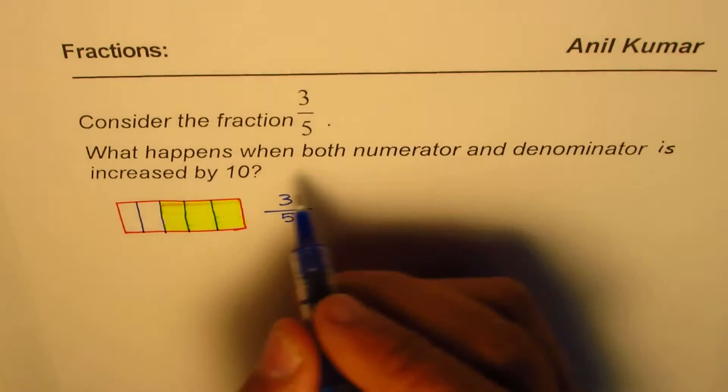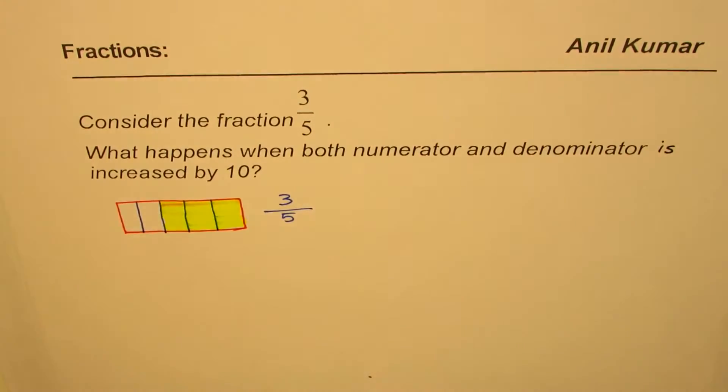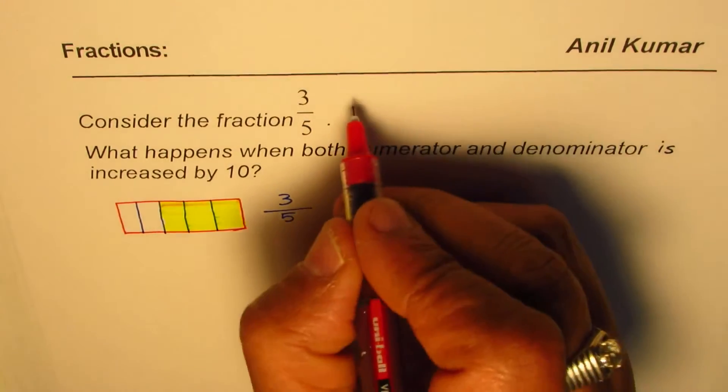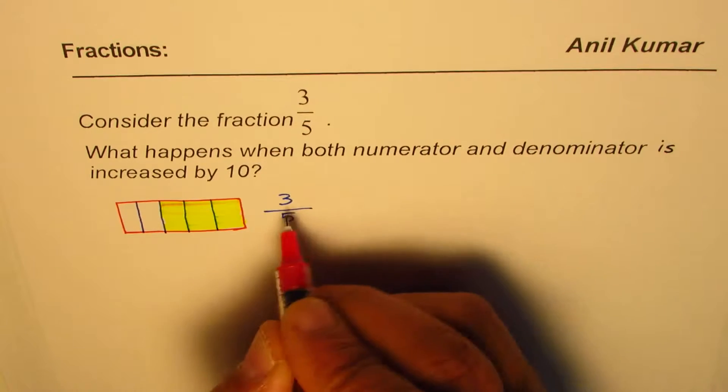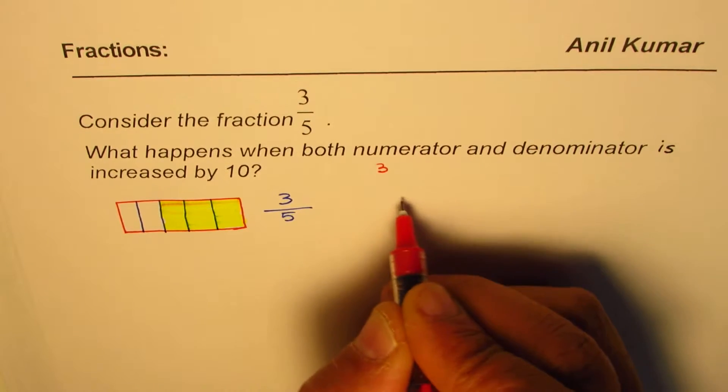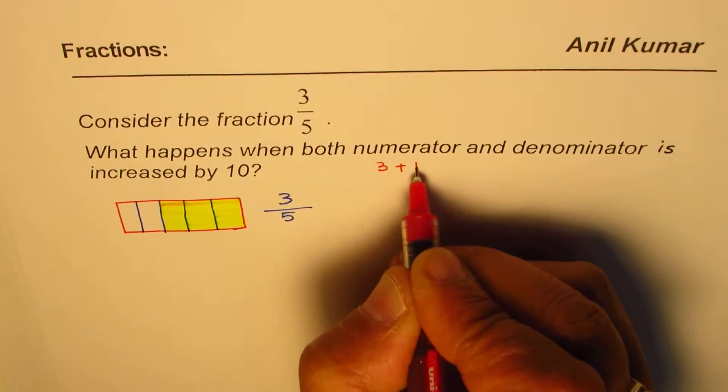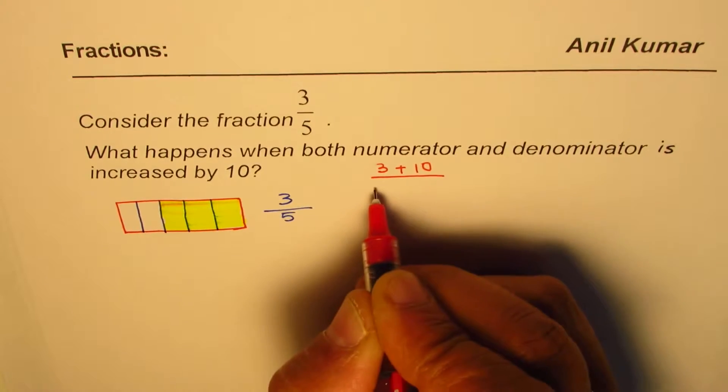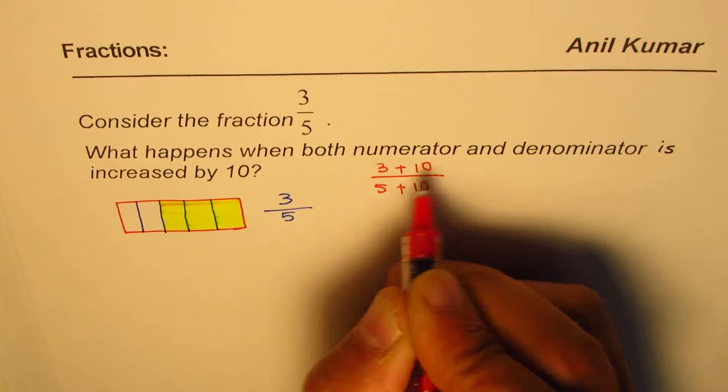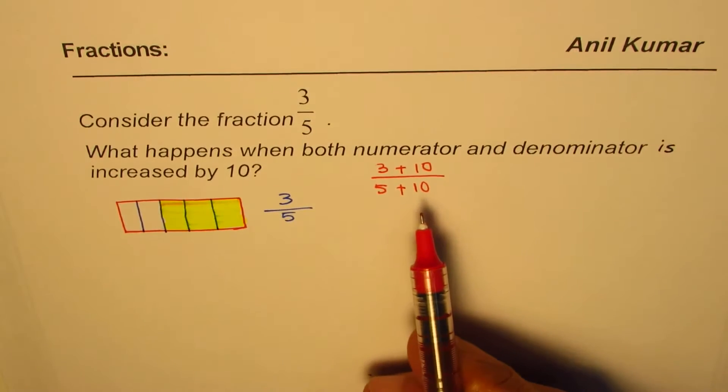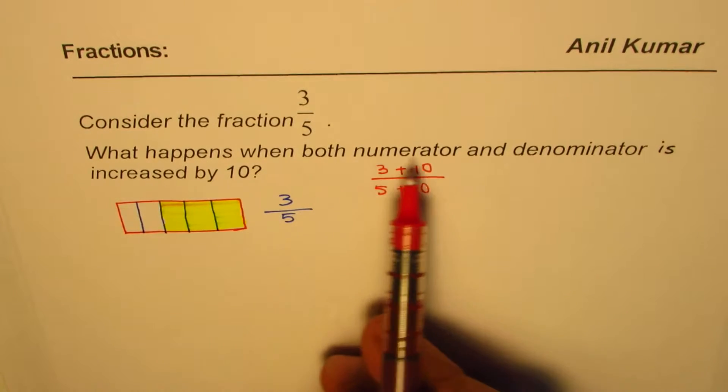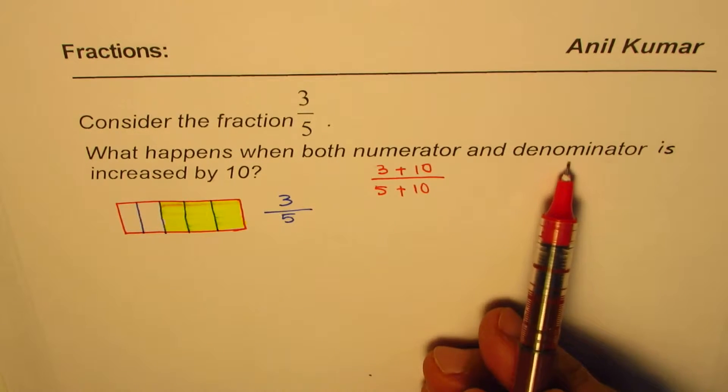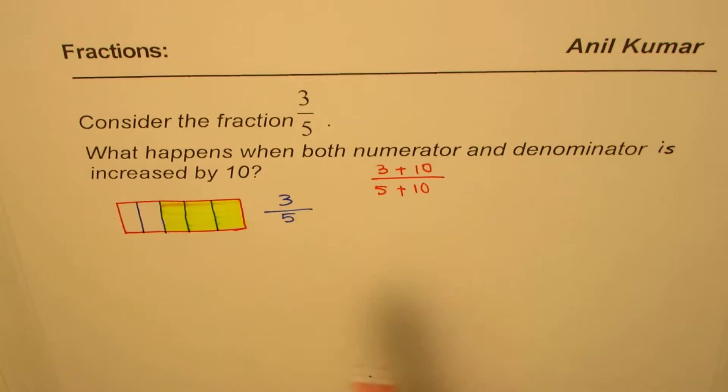Increased by 10 here means we are going to add 10 to each. So we will do kind of like this. 3 plus 10, we will write 3 plus 10 in the numerator and we do 5 plus 10. That is what we are trying to say when we say, what happens when both numerator and denominator is increased by 10. So we have increased each by 10.